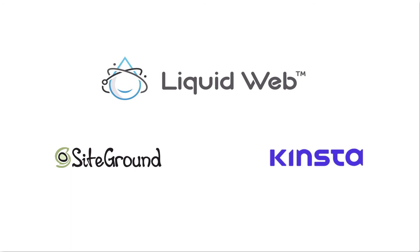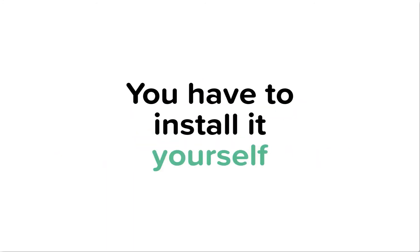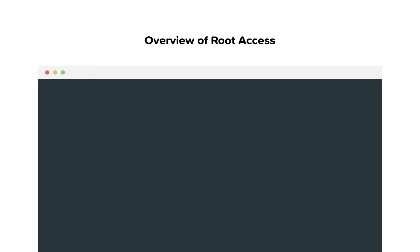WP-CLI doesn't ship with Linux operating system by default, but most modern web hosts like SiteGround, Kinsta, and LiquidWeb come with WP-CLI installed on their web server. If that is not the case with your web host, you have to install it yourself, and to do so you need to SSH into your web server with a user account that has all the privileges — in the world of Linux, you need root access.